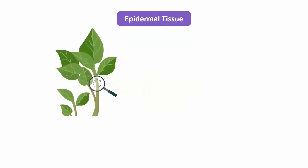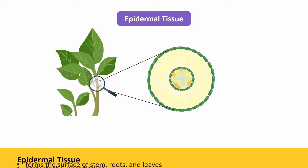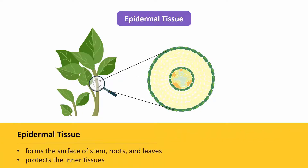Just like we have epithelial tissue that protects the structures inside us, plants also have a protective layer. The protective layer in plants is made up of epidermal tissues. Epidermal tissue forms the surface of stems, roots, and leaves to protect the inner tissues.